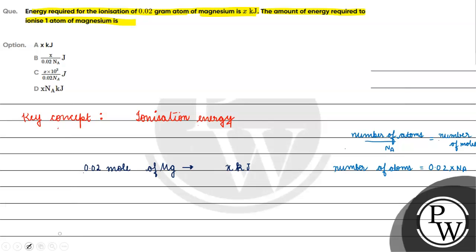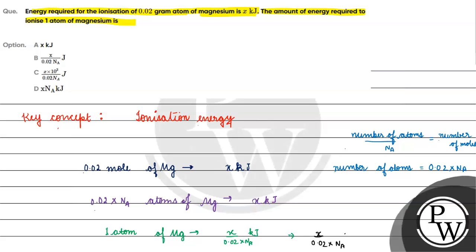So 0.02 into Avogadro's number of atoms of magnesium will ionize using x kilojoule of energy. Therefore, one atom of magnesium will require x by 0.02 into Avogadro's number kilojoule of energy. If we want to write it in joules: x by 0.02 into Avogadro's number into 10 raised to the power 3 joules, since 1 kilojoule equals 10 raised to the power 3 joules.